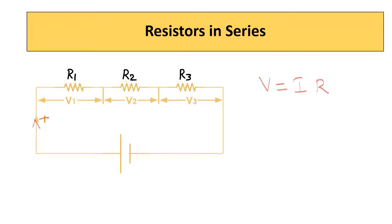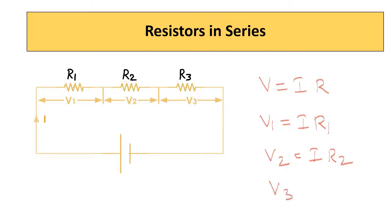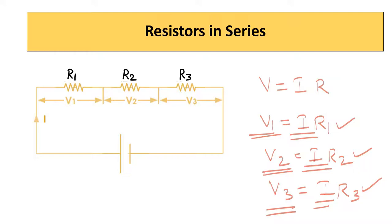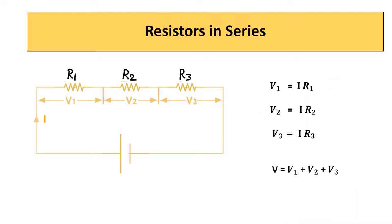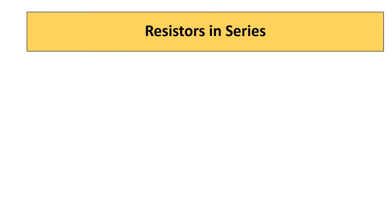The current I which is flowing in the circuit is the same throughout the circuit. The voltage drop V1 is equal to IR1, voltage drop V2 is IR2, and voltage drop V3 is equal to IR3. I is the same throughout the circuit; R1, R2, R3 values may differ. Accordingly, V1, V2, V3 values will be different. V is equal to V1 plus V2 plus V3.